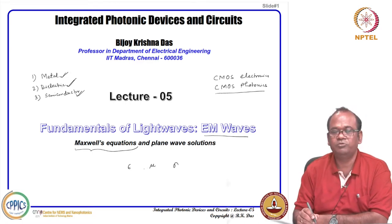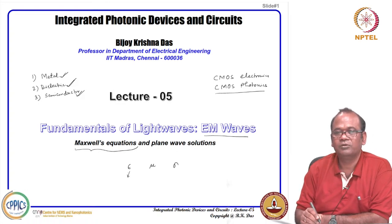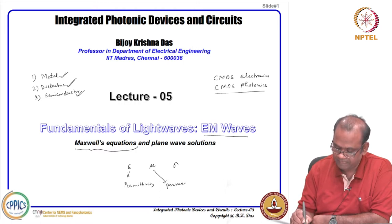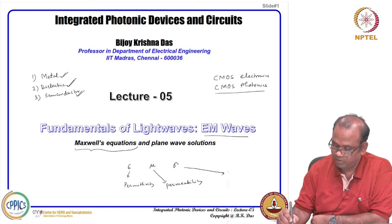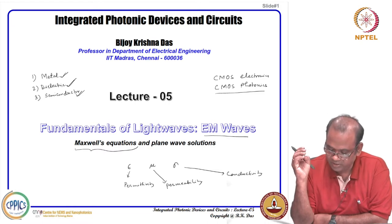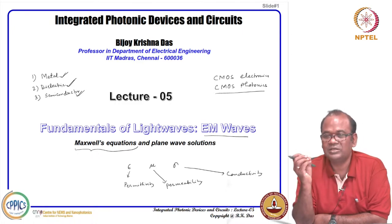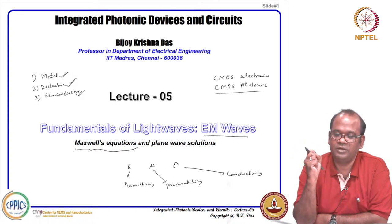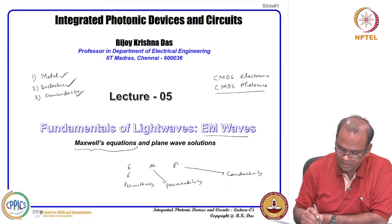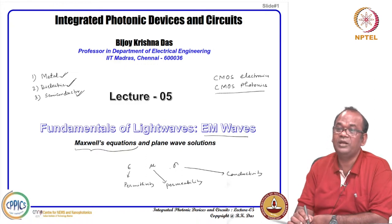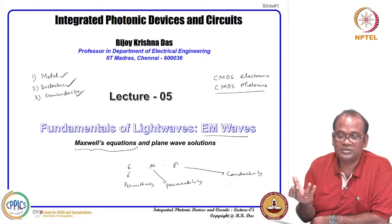For light-matter interaction, we need to consider three different parameters: epsilon, mu, and sigma. Epsilon is called permittivity, mu is called permeability, and sigma is called conductivity. For any material, whether in terms of electronics or photonics, you need to consider these three parameters — what is the value of these three parameters in the material medium. Depending on the conductivity sigma, we can distinguish whether a material is a metal, a dielectric, or a semiconductor.